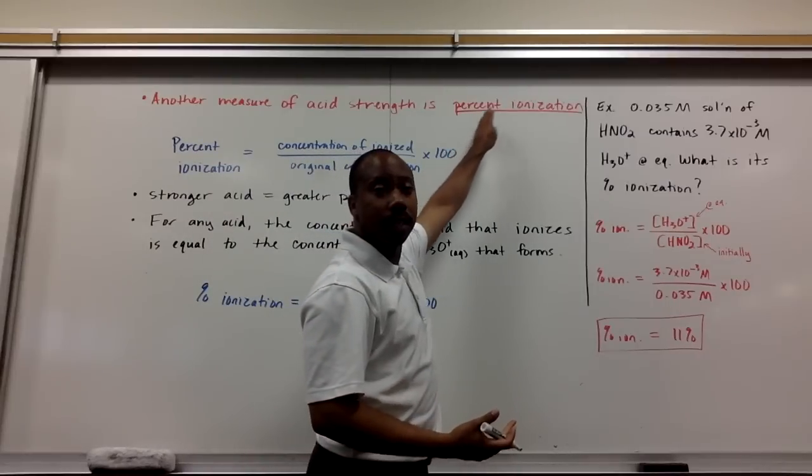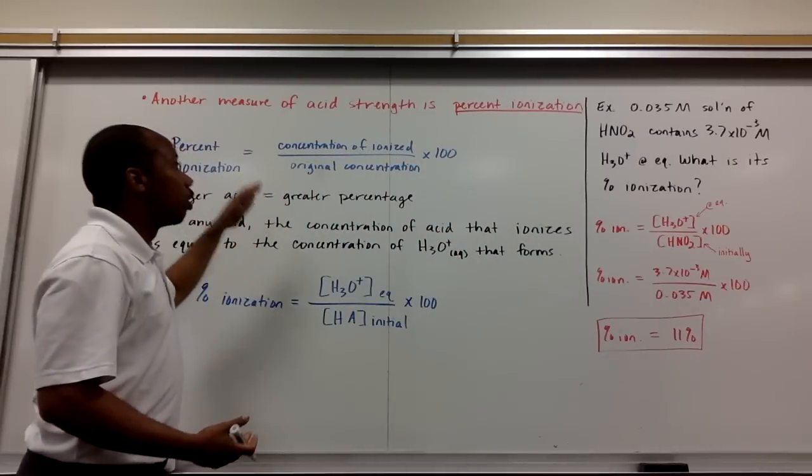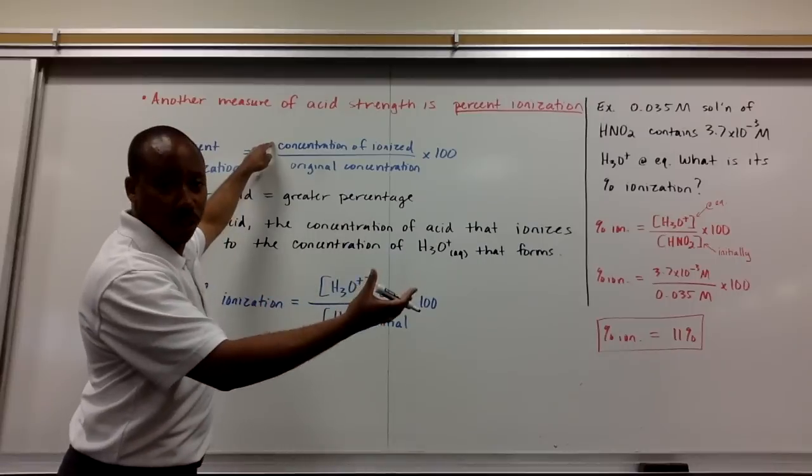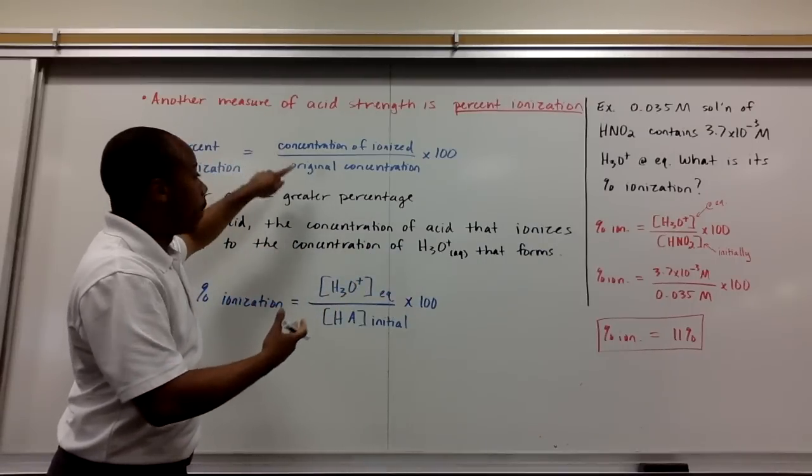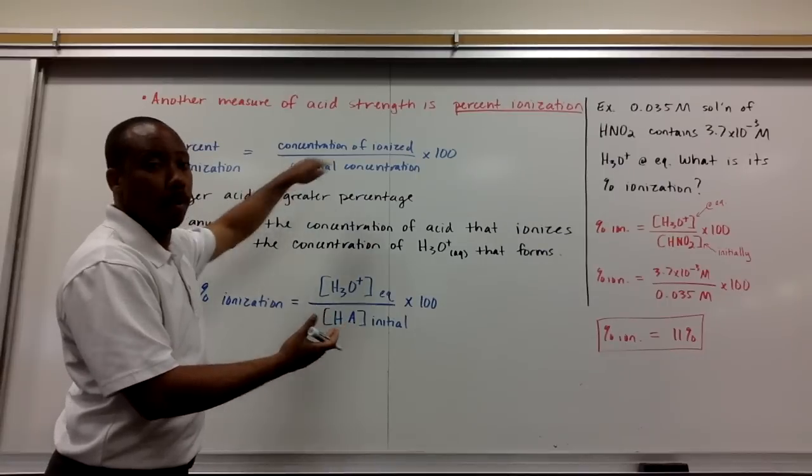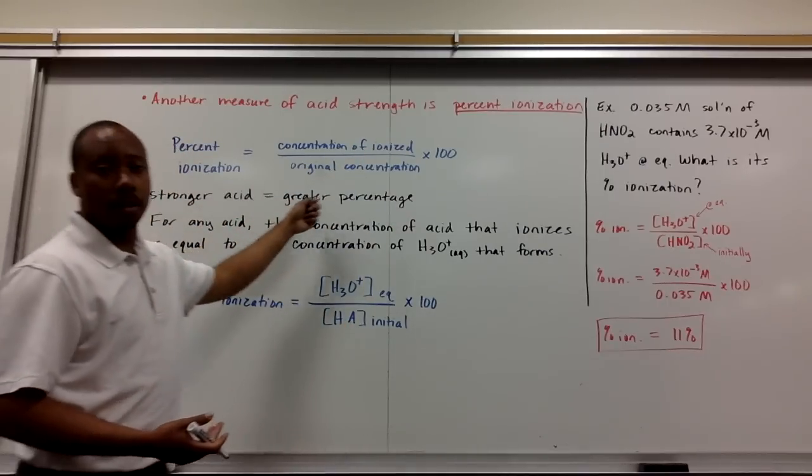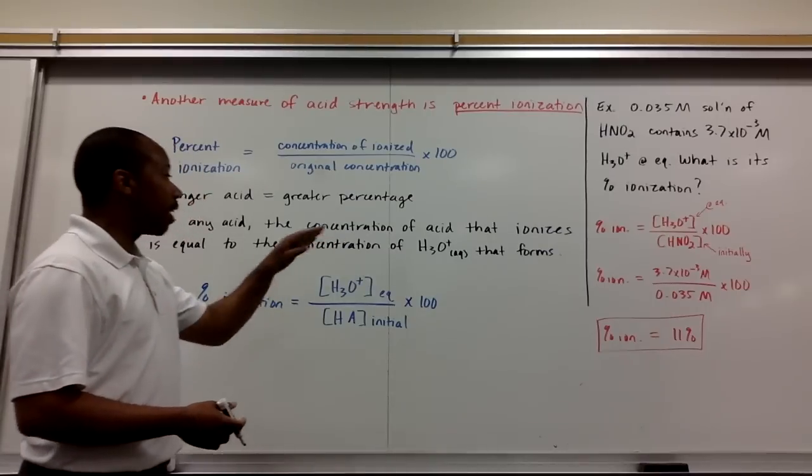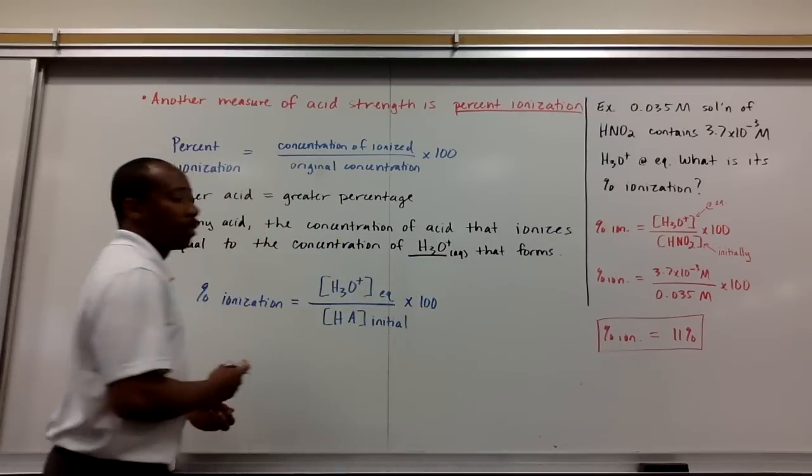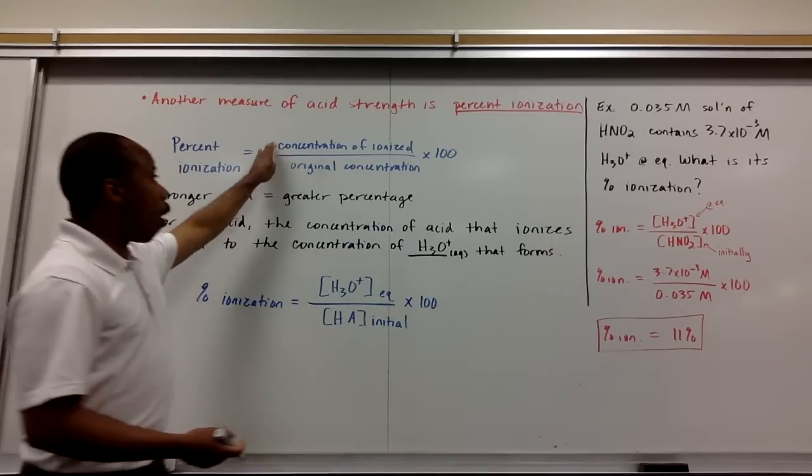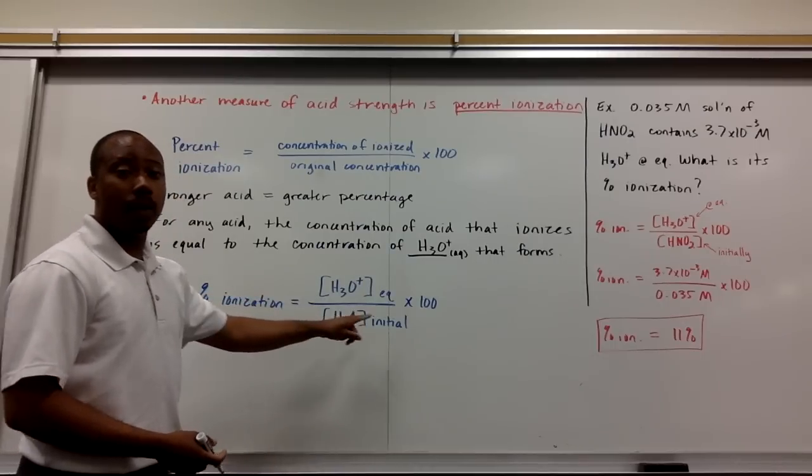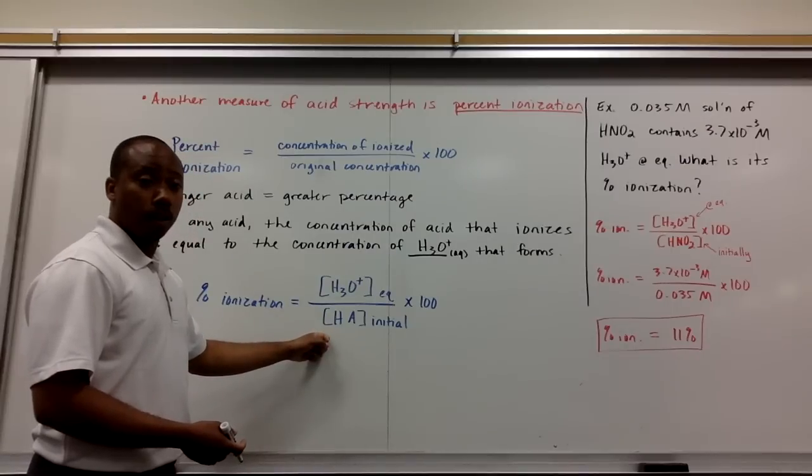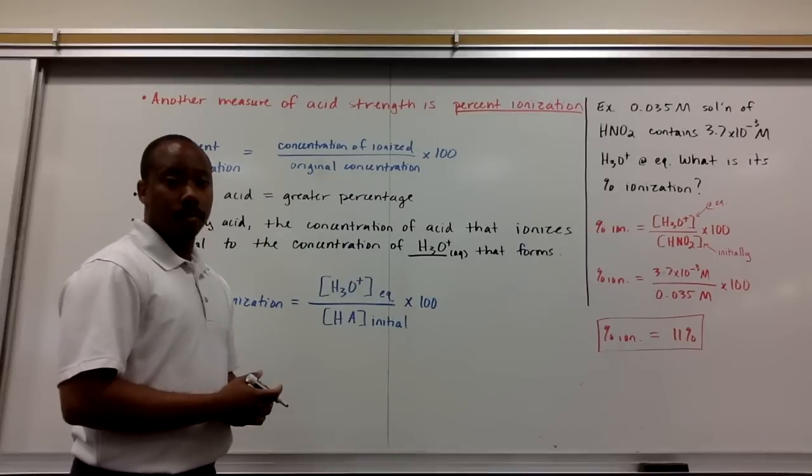Percent ionization is looking at the ratio of the concentration of your ionized substance in solution. What was ionized in solution, in comparison to your original concentration, both times 100. Now, a stronger acid will have a greater percent of ionization. For any acid, the concentration of acid that ionizes is equal to the concentration of H3O+ that forms. So your numerator, you'll always be looking at your concentration of H3O+ at equilibrium. So your percent ionization will be your concentration of hydronium at equilibrium, divided by your initial concentration of your acid, times 100.